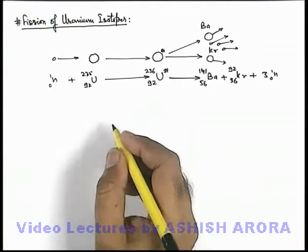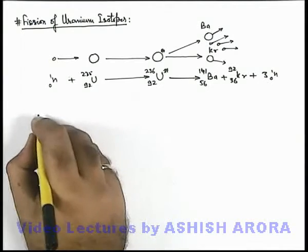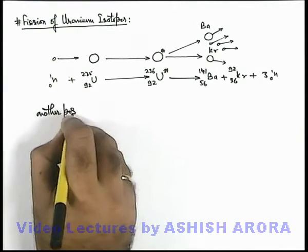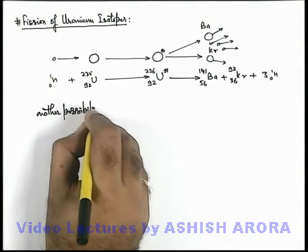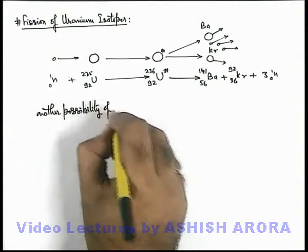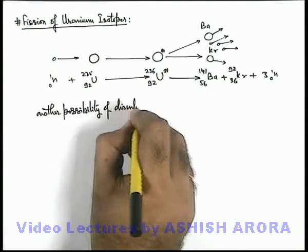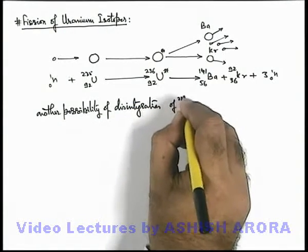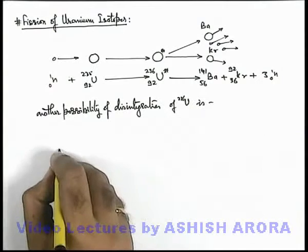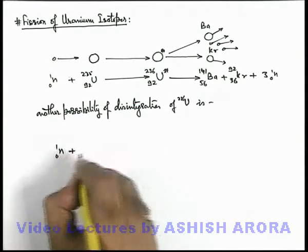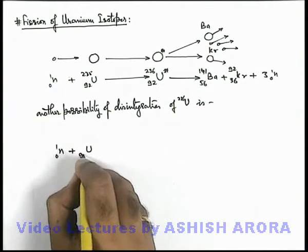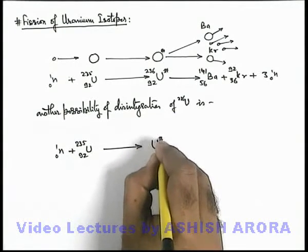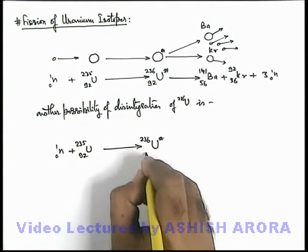Similar to this, another possibility of reaction is we can also write another possibility of disintegration of uranium-236. This is written as (0,1), which is fired on 92 uranium-235. It transforms into excited uranium-236 nuclei.